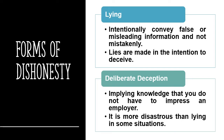Another form of dishonesty is deliberate deception. Deliberate deception is implying the possession of information or skills that you do not have. In certain scenarios, it can be even more disastrous than lying.